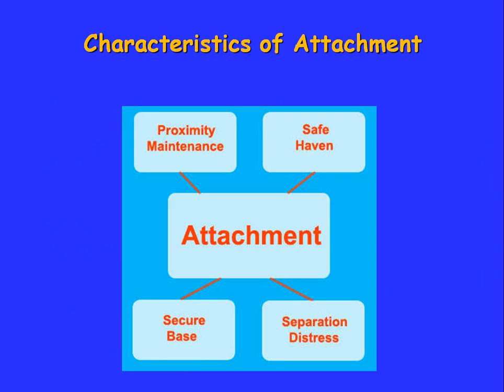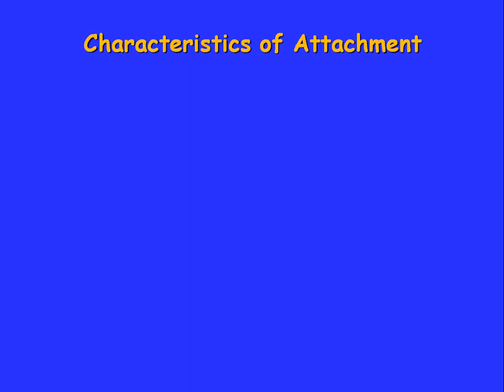We're going to look at the characteristics of attachment, and there are four major ideas: proximity maintenance, safe haven, secure base, and separation distress. I'm going to explain a little bit about each of those in the next slide.